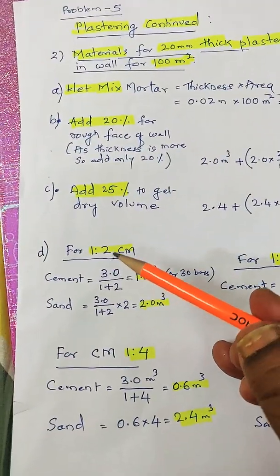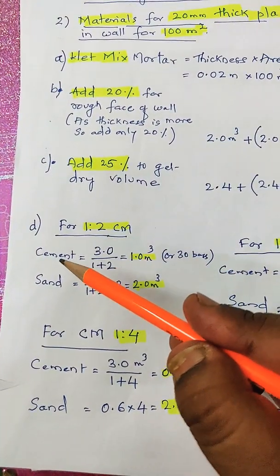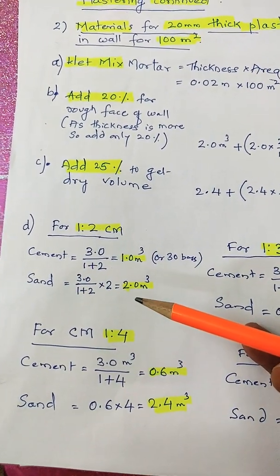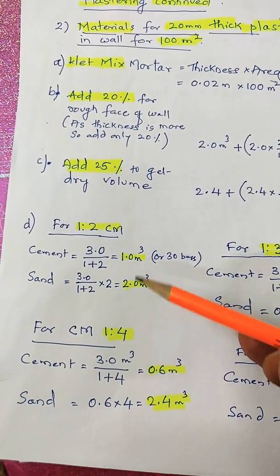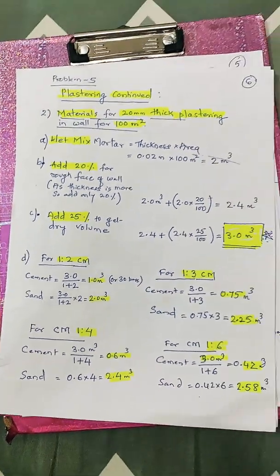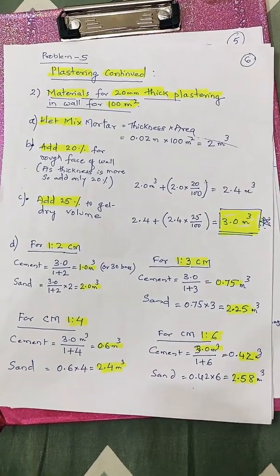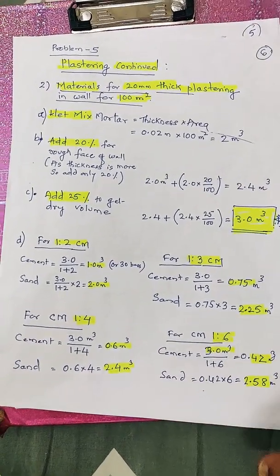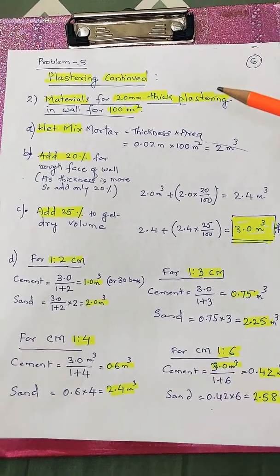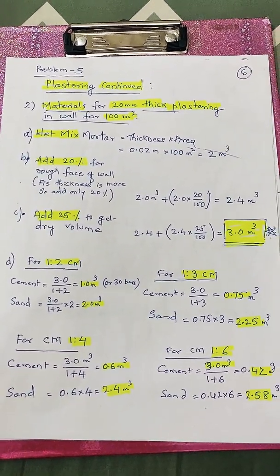In lower ratios, the cement will be more and sand will be less compared to the cement. This is the material analysis for 20mm plastering. Thank you.